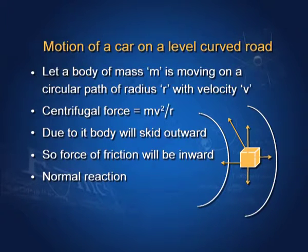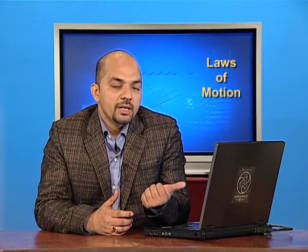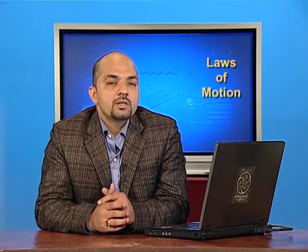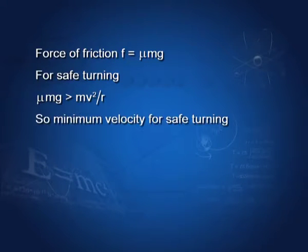The normal reaction offered by the ground to the car is R equals Mg. Force of friction F equals mu into R, so F equals mu into Mg. For safe turning, this force of friction acting inward should be greater than the centripetal force. So mu Mg should be greater than Mv² upon R. Cancelling M from both sides, we get the minimum velocity for safe turning: V equals under root of mu R times g.